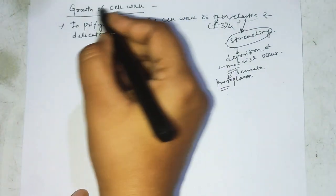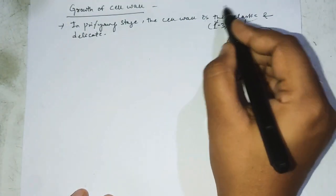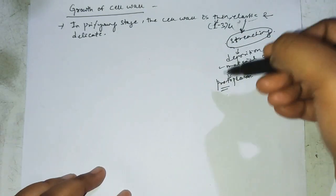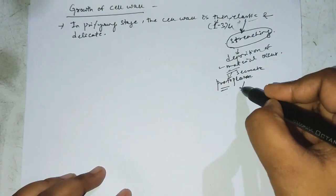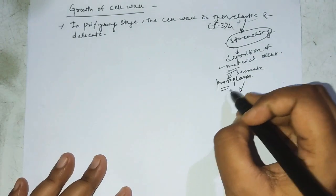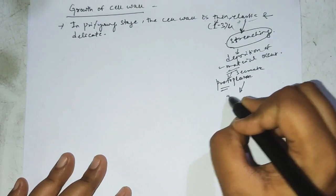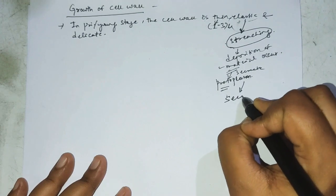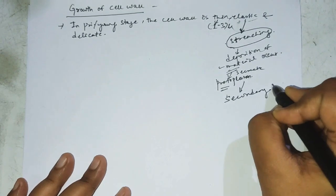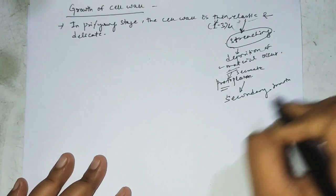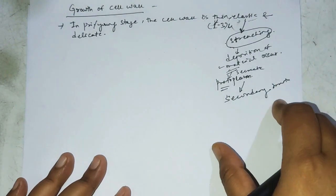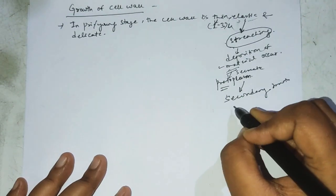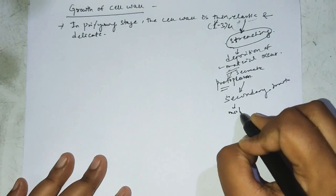In the primary stage, the cell wall is thin. Due to deposition of material, the cell wall undergoes secondary growth. Because of this secondary growth, the cell becomes mature.